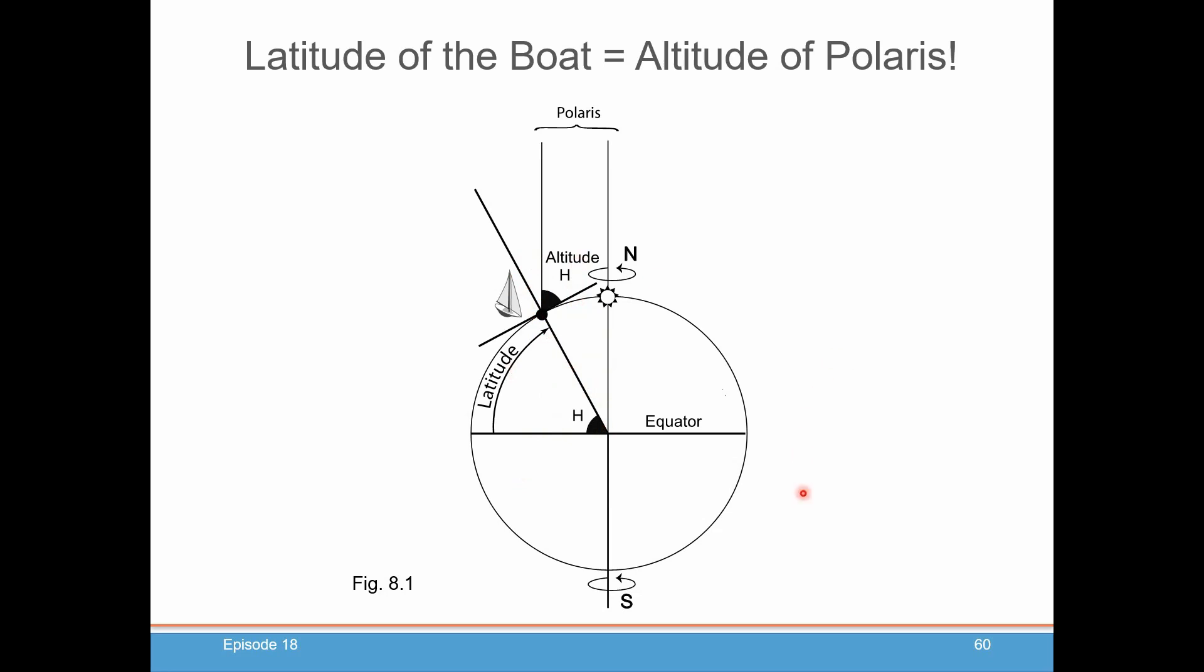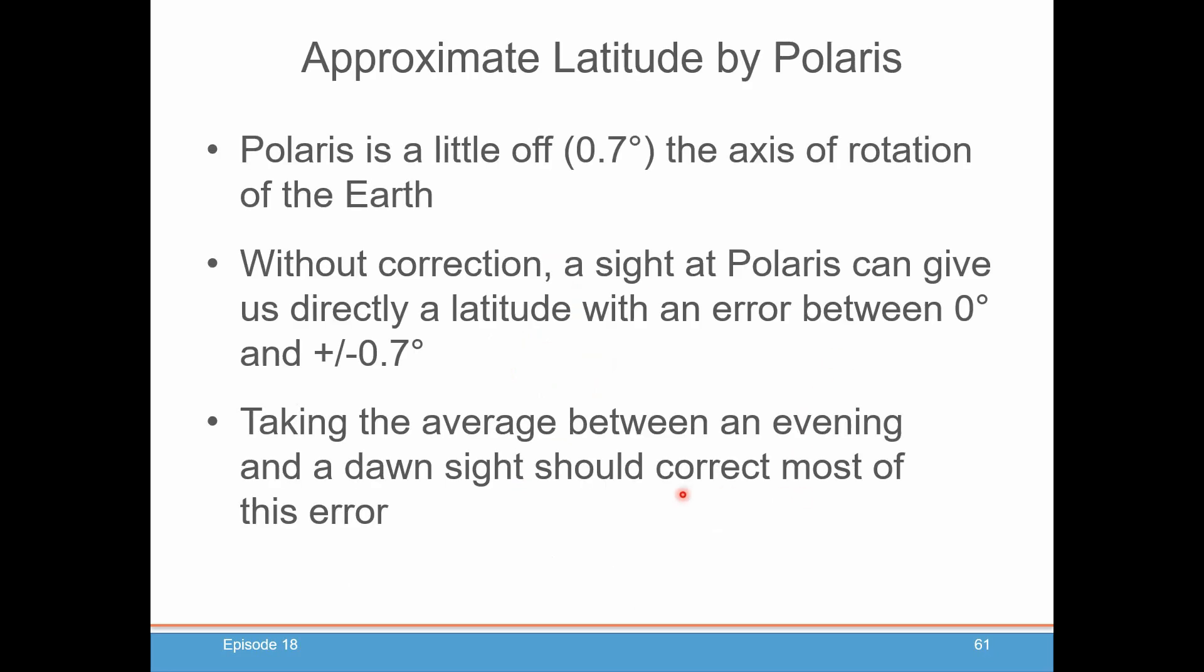Okay, enough for the geometry lesson. So look, why do we call this an approximate latitude by Polaris? Well, it turns out that Polaris is just a little bit off the axis of rotation of the Earth. In 2022, where we're recording this, it's off by about 0.7 degrees.